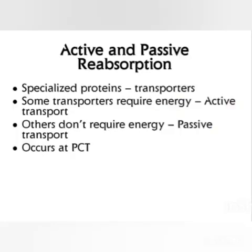Let us briefly look at active and passive reabsorption. Specialized proteins called transporters are located on the membranes of the various cells of the nephron. These transporters grab small molecules from the filtrate as it flows by. Some transporters require energy — usually as ATP — which is active transport, while others do not require energy, which is passive transport. Both passive and active reabsorption of molecules from the nephron to the blood occurs at the proximal convoluted tubules (PCT) of the nephron.